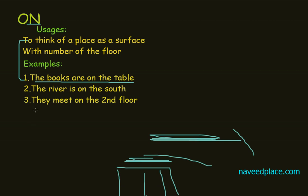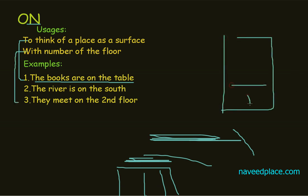The third example is: they meet on the second floor. So this uses ON with the number of the floor. For example, first floor, second floor, third floor, fourth floor — whenever we want to show the number of the floor, we will use ON.